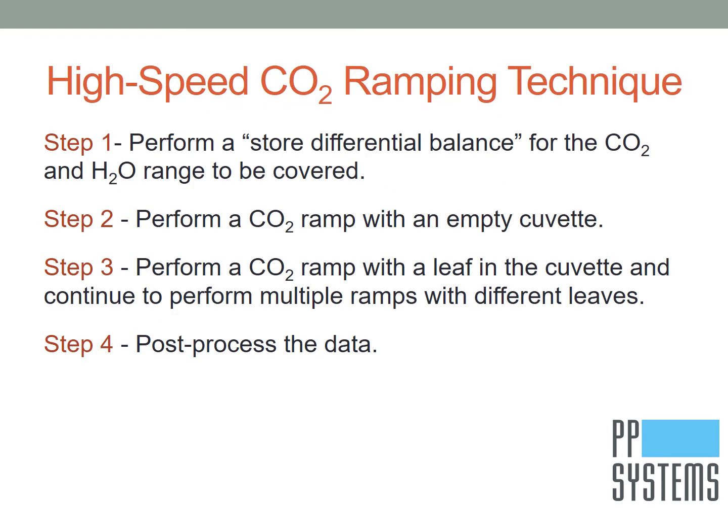So how does the high-speed CO2 ramping technique work? With the Cyrus 3, system setup, measurement routine, and post-processing of data is fast and easy. Prior to making measurements, we recommend performing a stored differential balance for both CO2 and H2O throughout the range to be covered. Next, perform the CO2 ramp with an empty cuvette to establish a baseline. Then place your leaf inside the cuvette and repeat the same ramp. When you are done, you can then post-process the data very easily.